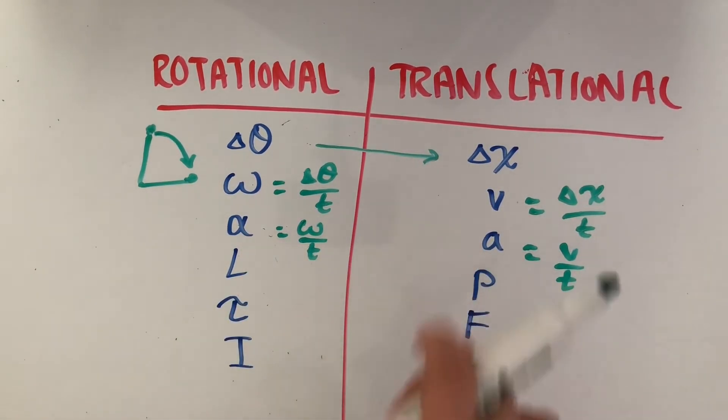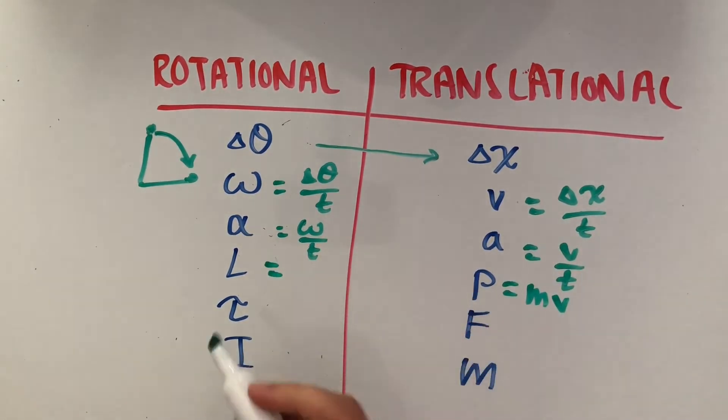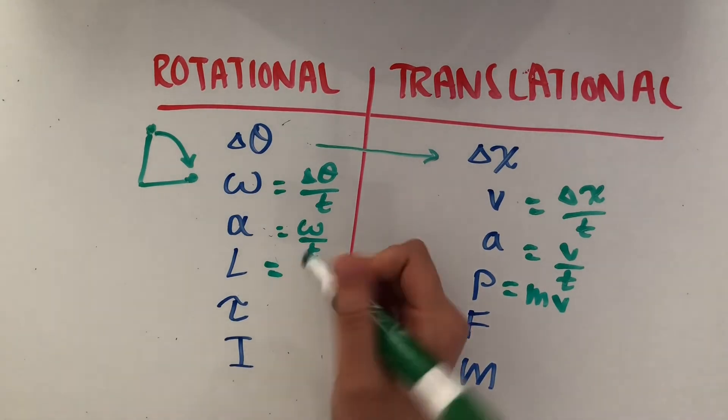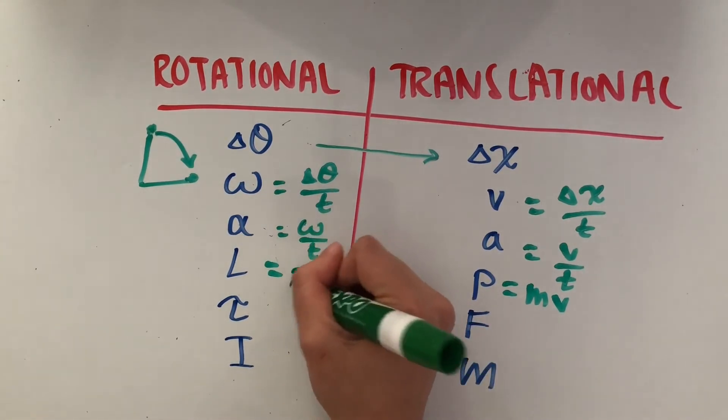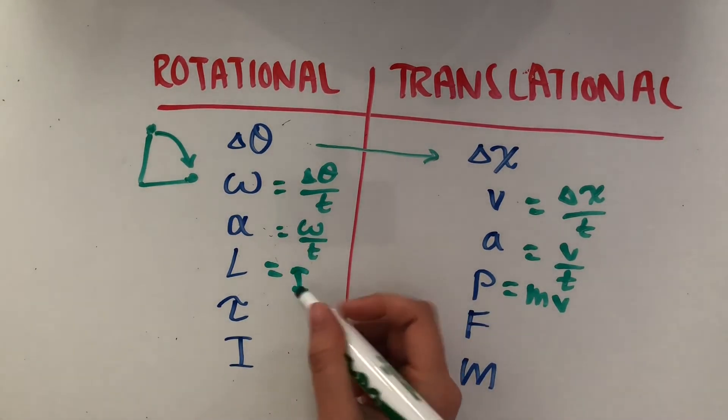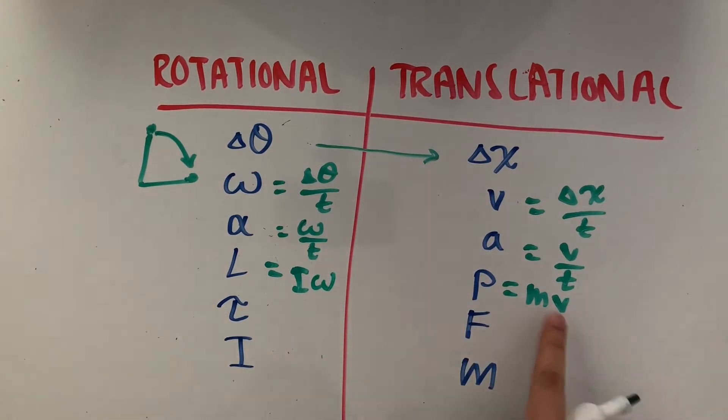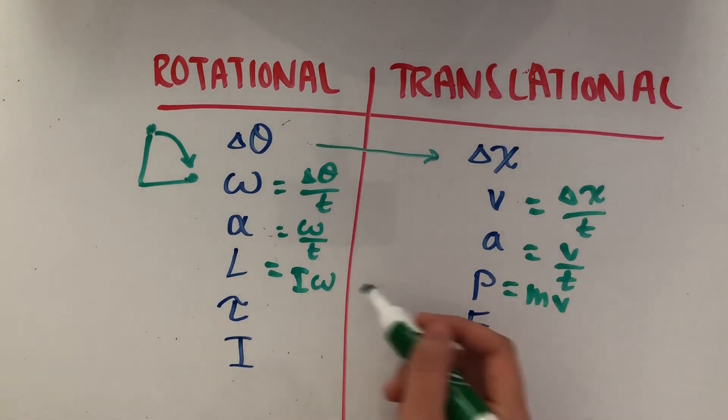Moving on to rotational and translational momentum. Translational momentum P is mass times velocity. Rotational momentum, or angular momentum L, is the moment of inertia I, which is kind of like mass, multiplied by angular velocity ω, which is the rotational counterpart of translational velocity. Even the ways that these two are calculated are similar.